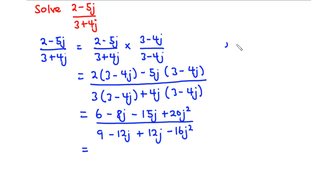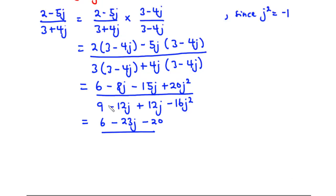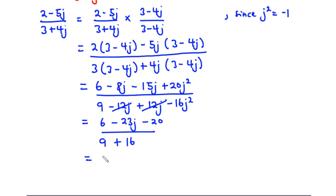Since j² = -1, the numerator becomes: 6, then -8j - 15j = -23j, and 20 times -1 = -20. The denominator: 9, the -12j and +12j cancel, leaving -16j² = -16 times -1 = +16, so 9 + 16 = 25. In the numerator, 6 - 20 = -14.